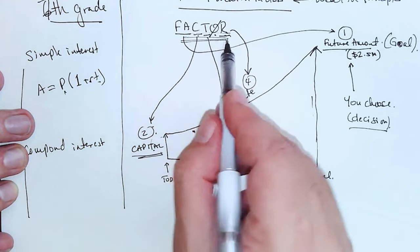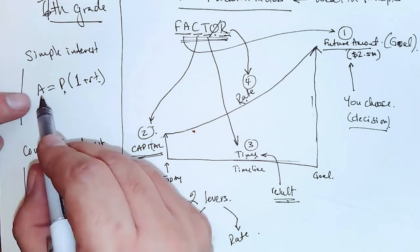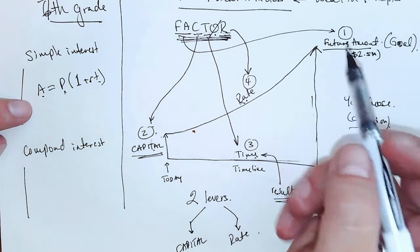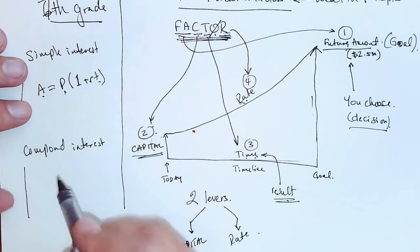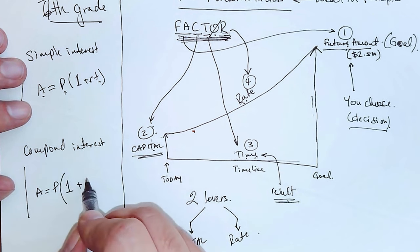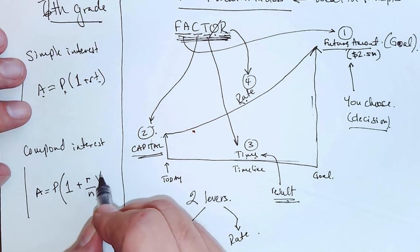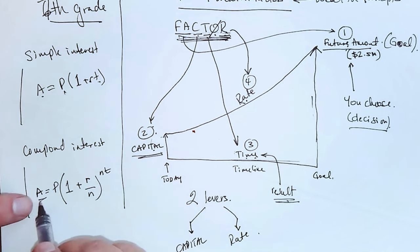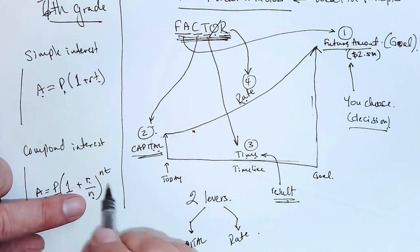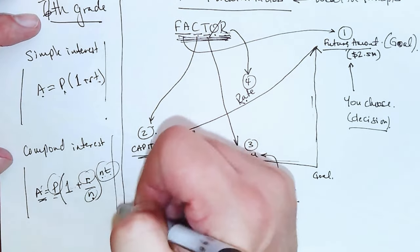Compound interest is very similar formula. A equals, again A is future amount, P is the capital, one plus r over n to the power I think it was like nt. So A is future amount, P is capital, R is rate, N is time. This is rate, this is your capital. Again, why am I showing you this? The point is this: there are only four factors on the planet to build wealth.